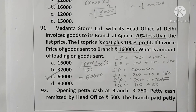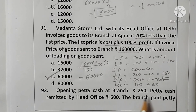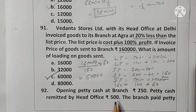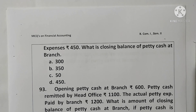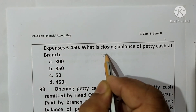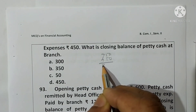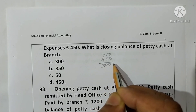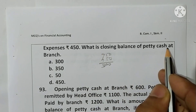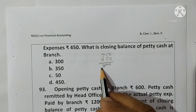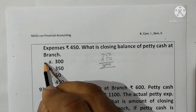Question 92: Opening petty cash at branch rupees 250; petty cash remitted by head office rupees 500. Total is 750. Branch paid petty expenses rupees 450. Closing balance is 750 minus 450 equals rupees 300. Option A is correct.